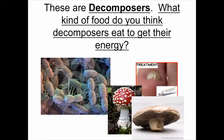Decomposers. For this one, write down this definition: decomposers are organisms that use chemicals to break apart tissue or cells. Our primary examples of decomposers are bacteria and fungus — those are the two biggest decomposers out there. Bacteria and fungus are decomposers; they use chemicals to break apart dead and living tissue in order to get their energy. One important thing to note: these decomposers don't have mouths. They simply release chemicals to break apart tissue and cells in order to get their energy.